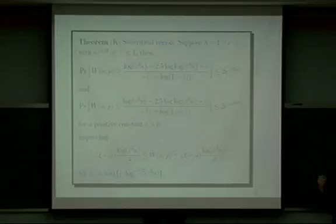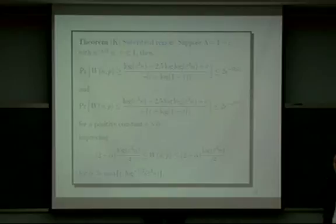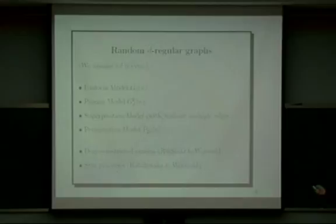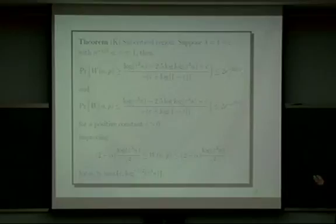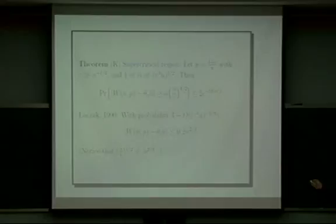Question from audience: in your subcritical case, is the distribution close to normal distribution? Answer: No, that's not the case. This says that it's not. The variance here is different, and it's not close to a normal distribution. In the case of normal distribution, this term should be squared. In the previous supercritical case, this term is squared.